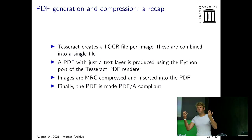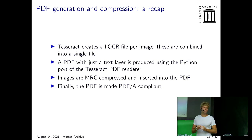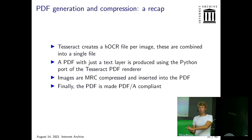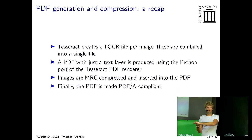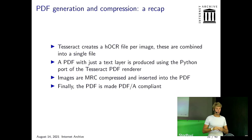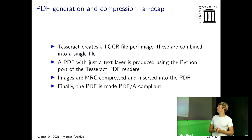A recap of how all of this works: we run Tesseract on a set of images; Tesseract generates an XML file for every image; we take all those small XML files and turn them into one big XML file — that's the end of the OCR step. Then we make the initial PDF with just a text layer using that big XML file. Then we start reading the images, compressing them, and inserting them into that PDF. Finally, there is some code that makes the PDF archival standard compliant — we tell it the color space we're using and confirm it is an archival compliant PDF.